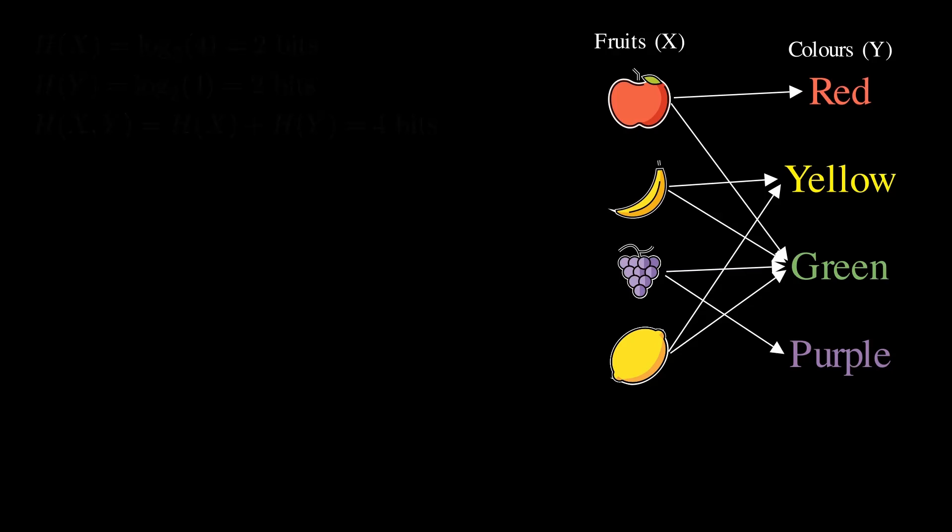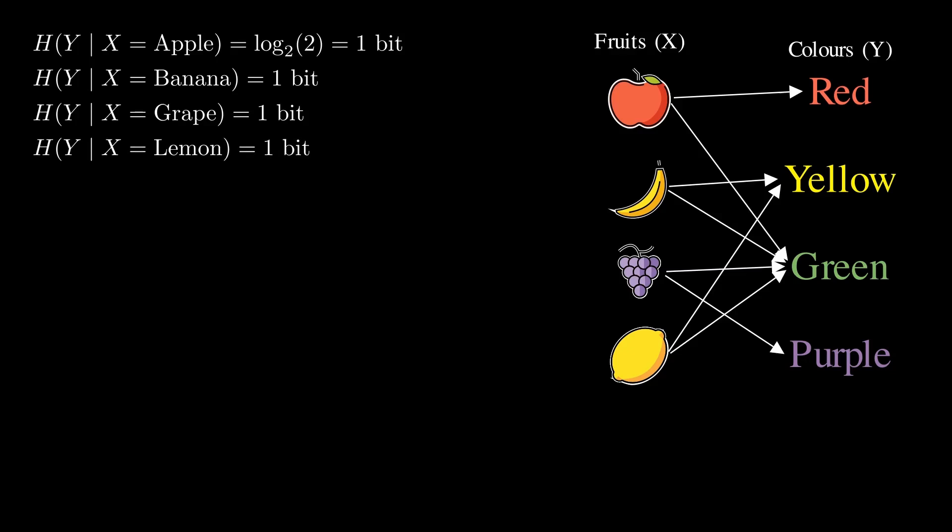So if you learn the fruit, the color's uncertainty shrinks. For example, if we know that the fruit is an apple, then we only have two possibilities for the color. And log base 2 of 2 is one bit. So the entropy behind the color in this case, knowing that it's an apple, is one bit. It's the same for the banana, one bit. Same for the grape, one bit. Same for the lemon, one bit. So the average conditional entropy is one bit. To calculate the joint entropy, it's actually the entropy of x plus the entropy of y by knowing x. Why is this less than four bits? Because knowing the fruit reduces color uncertainty. They're dependent.